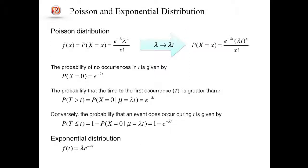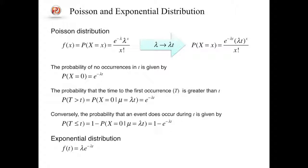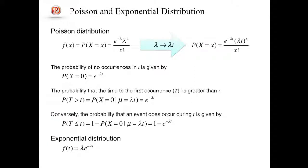The probability of no occurrences of spikes in t units of time is given by the second equation. This can be interpreted as the probability that the time to the first spike, capital T, is greater than t. Conversely, the probability that a spike does occur during t units is given by the fourth equation. Notice that this is the cumulative exponential distribution, so by differentiating by t, the probability density function of the exponential distribution is obtained.